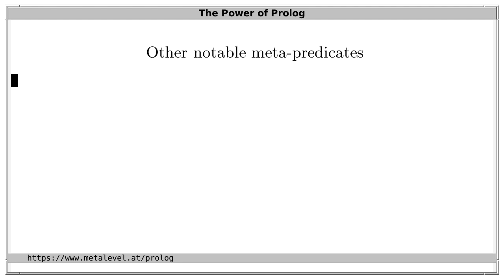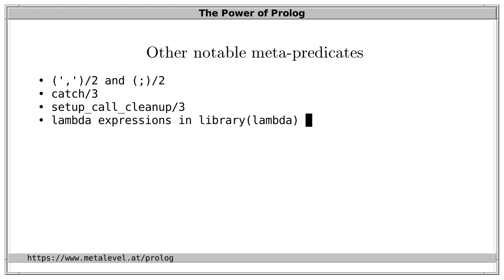And these were only a few very common examples of metapredicates. There are many other notable metapredicates such as conjunction and disjunction because these are of course also predicates to take predicates as arguments. Catch is a predicate that lets us catch and reason about exceptions when a predicate is invoked. Setup call cleanup is an important metapredicate that guarantees that a cleanup is executed after calling a goal.